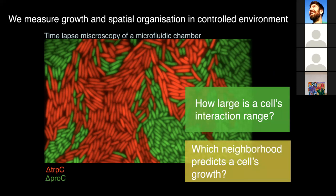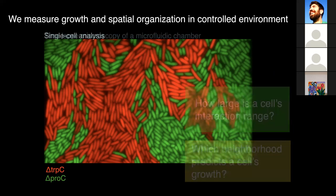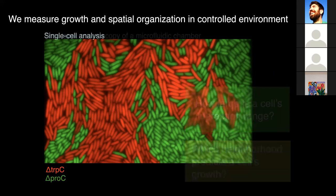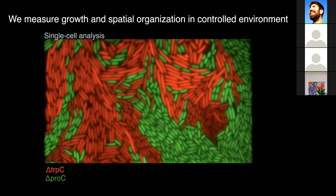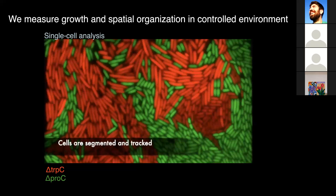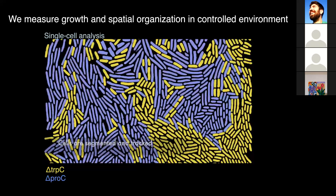The naive expectation is that when cell type A is surrounded by cell type B, it will grow faster because it can receive more of the amino acids. The question is at which neighborhood does the cell receive amino acids from. This is a good experimental dataset to ask how large is a cell's interaction range. More specifically, the question we phrase is: what is the neighborhood that predicts a cell's growth rate? To address this question, we had to develop an analysis pipeline that allowed us first to identify the two cell types automatically, and then to track them in time to measure for the same individual the length and the growth rate over time.